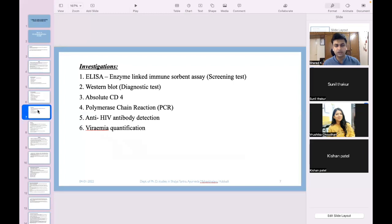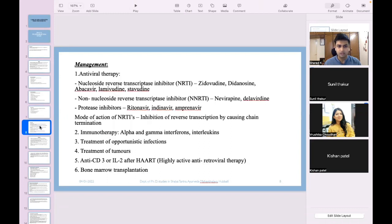When it comes to investigations, enzyme-linked immunosorbent test for screening, then Western blot, absolute CD4 count, PCR test, anti-HIV antibody detection, and viremia quantification. With all these we can investigate the person, subject them to these investigations and then follow the protocol.